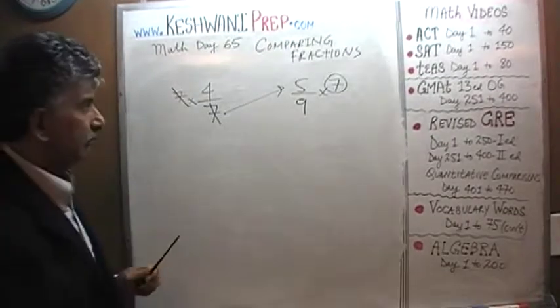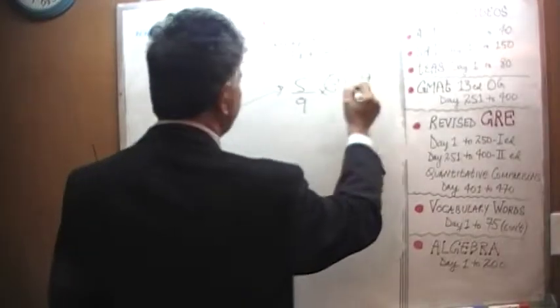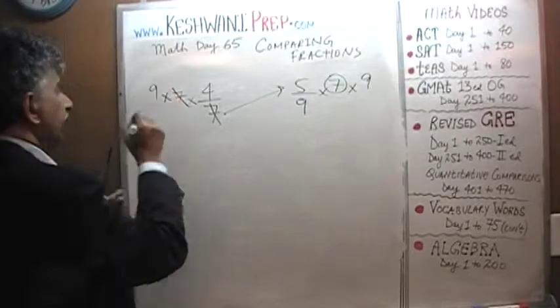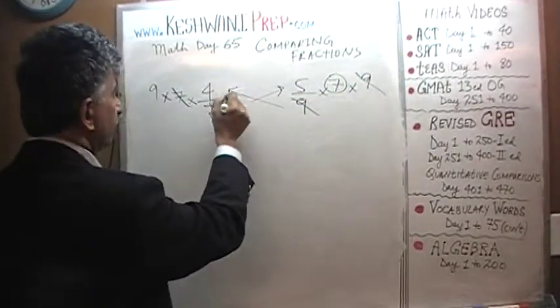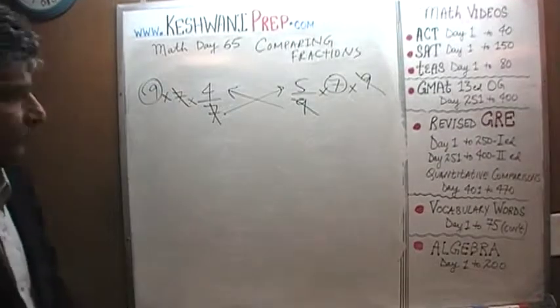How do we get rid of this 9 from the bottom? Same thing. Multiply both fractions by 9. Now that 9 is going to kill that 9. And that 9 reappears on this side over here. That's all.